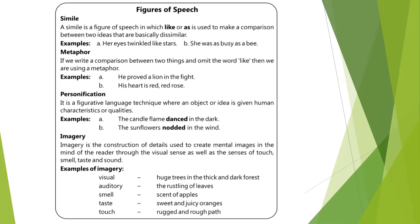Next is personification — a technique where an object or idea is given a human characteristic. For example, 'the candle flame danced in the dark' — dancing is a human quality given to the flame. 'The sunflowers nodded in the wind' — nodding the head is human, but the flowers are doing it. Imagery is the construction of details used to create mental images in the mind of the reader. There are five kinds: visual, auditory, smell, taste, and touch imagery, corresponding to the five senses.